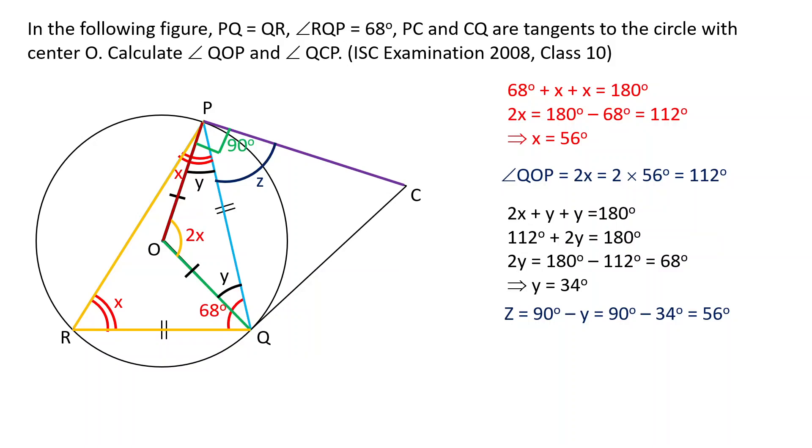PC and QC both are tangents, and the length of tangents from an external point C are equal. So PC is equal to QC. It means triangle PCQ is an isosceles triangle, so opposite angles are equal. It means angle PQC is also z.